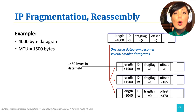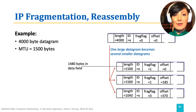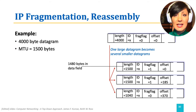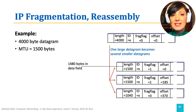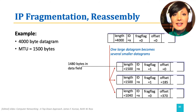The second datagram will also have 1480 bytes, which with 20 bytes of header will be a total of 1500 bytes. This datagram will have the frag flag set to one, signaling that it is fragmented, with the offset used to indicate the starting position of the data in the fragment in relation to the start of the data in the original packet, in blocks of eight bytes. This will be 1480 divided by 8, which is 185.